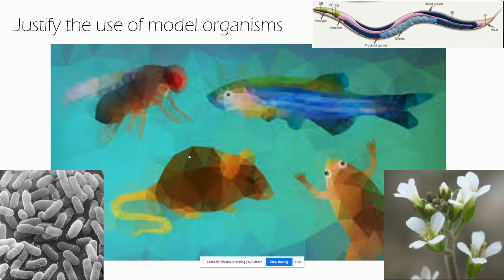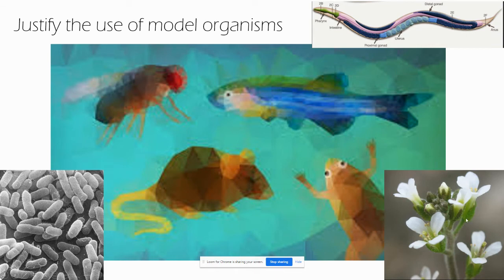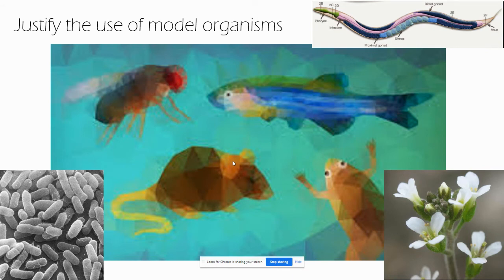Familiarity with taxonomic groups allows us to use predictions and inferences based on model organisms — ones that are either very easily studied or have been very well studied in the past. Important examples include the bacterium E. coli, which is very easy and cheap to grow; the flowering plant Arabidopsis, which has been very well studied genetically; the nematode C. elegans; the arthropod Drosophila melanogaster, which is the fruit fly; and several chordates such as mice, rats, zebrafish, and Xenopus. Information from these species can be applied to other species that are more difficult to study directly — for example, you'd choose a mouse or rat over a panther, as it costs far less to keep 50 mice than 50 panthers.